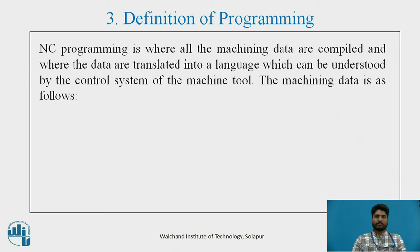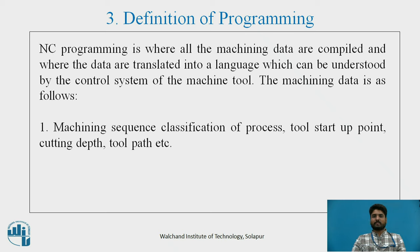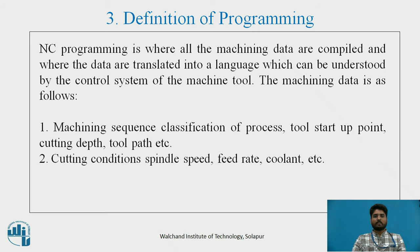Third, definition of programming. Numerical control programming is where all the machining data are compiled and translated into a language which can be understood by the control system of the machine tool. The machining data includes: the machining sequence and classification of process, tool startup point, cutting depth, tool path, etc. Cutting conditions like spindle speed, feed rate, coolant, etc. And selection of cutting tools.